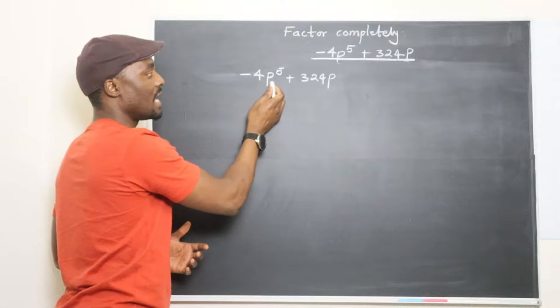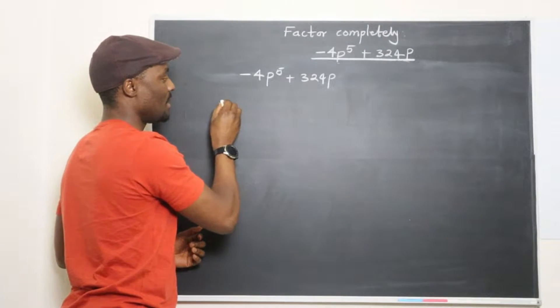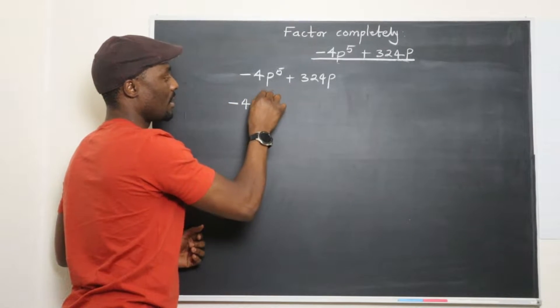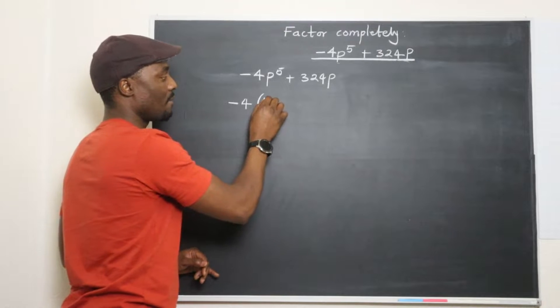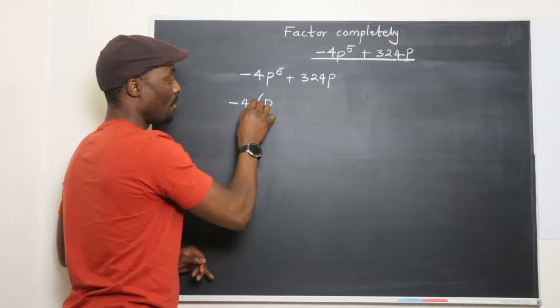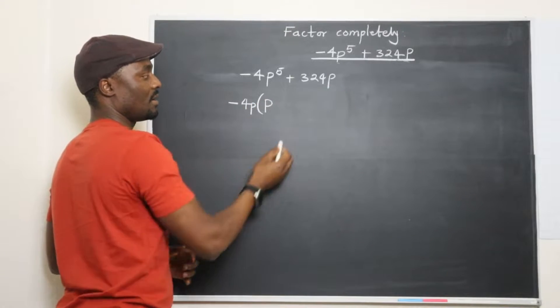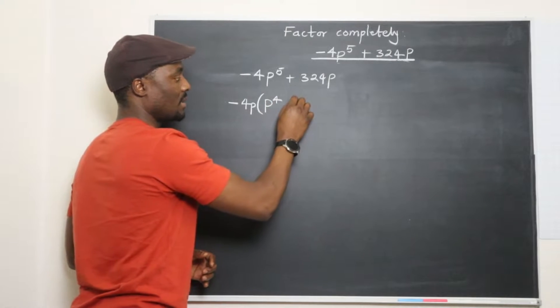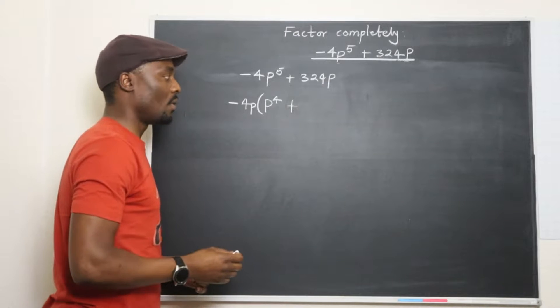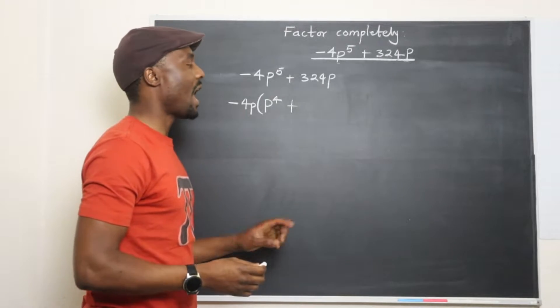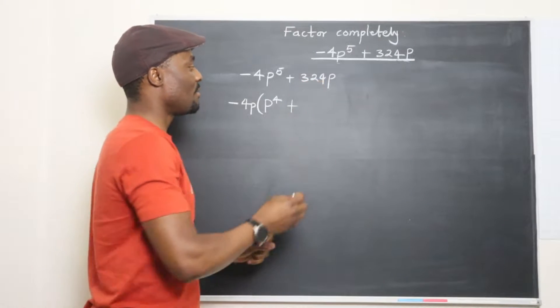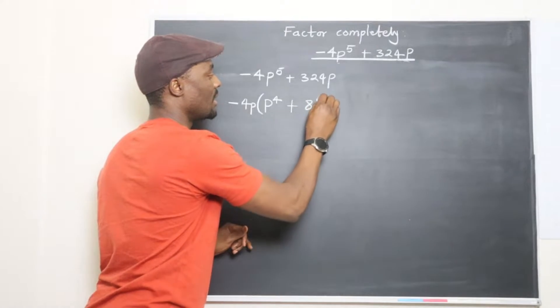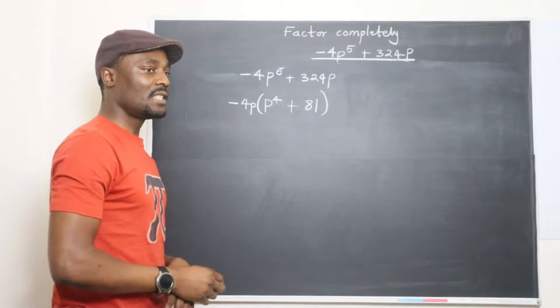If you take negative 4 and P out, what you're going to have left will be negative 4P because P is also here. So all that's left will be P to the fourth. Plus, if you divide 324 by 4, you're going to have 81. That's all you've got.